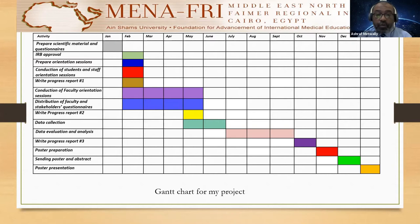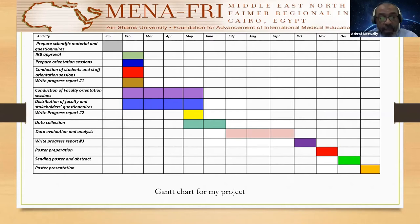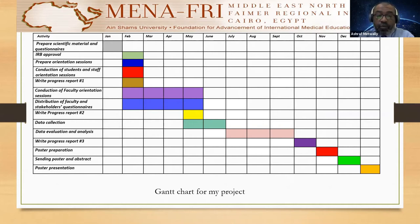Writing progress report number two in May 2021; data collection in May and June 2021; data evaluation and analysis from July to September 2021; writing progress report number three in October 2021; poster preparation in November 2021; sending poster and abstract in December 2021; and lastly, poster presentation in January 2022.